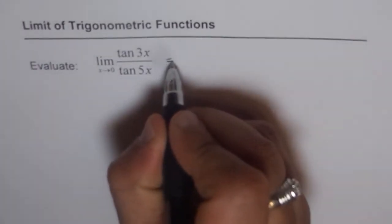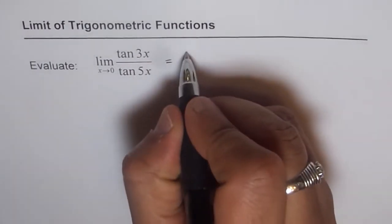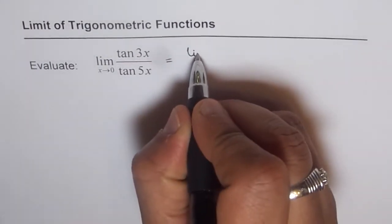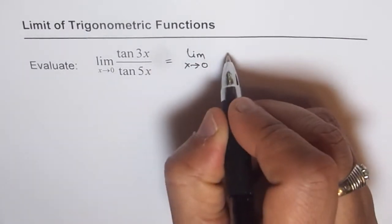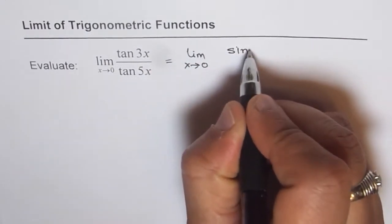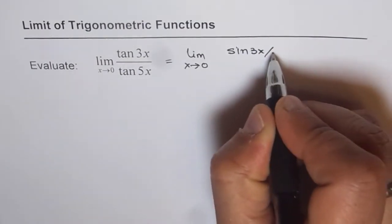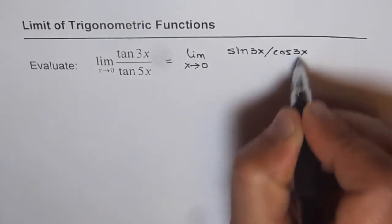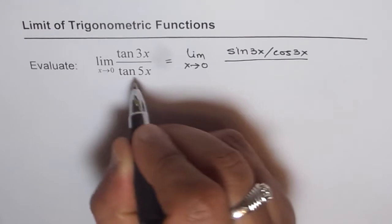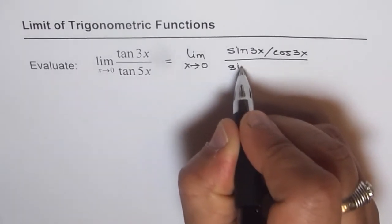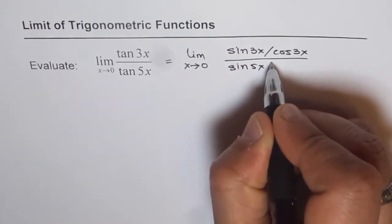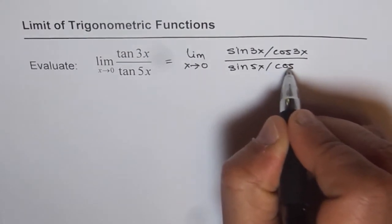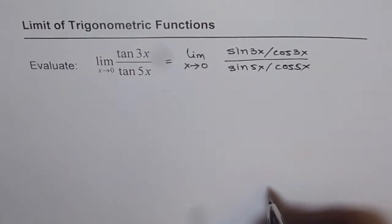Now see, we can write this expression as sin 3x over cos 3x. So we can write this as limit x approaching 0 of sin 3x over cos 3x divided by tan 5x, which is sin 5x over cos 5x.